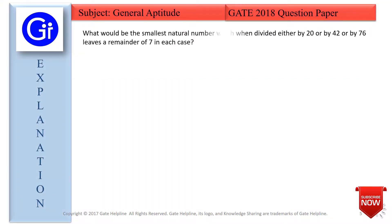Now we will see the explanation to this question. In this question we need to find the smallest natural number which when divided either by 20 or by 42 or by 76 leaves a remainder of 7 in each case. Let n be the smallest number which is divisible by x, y and z and leaves remainder r in each case.